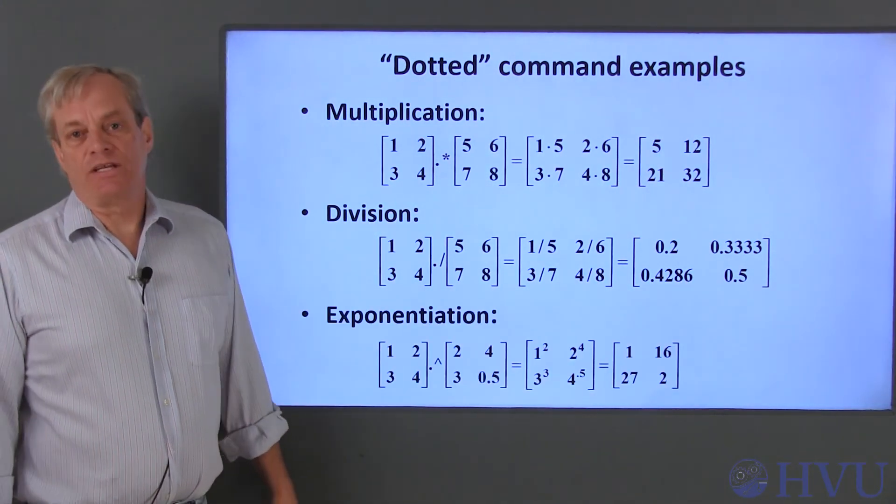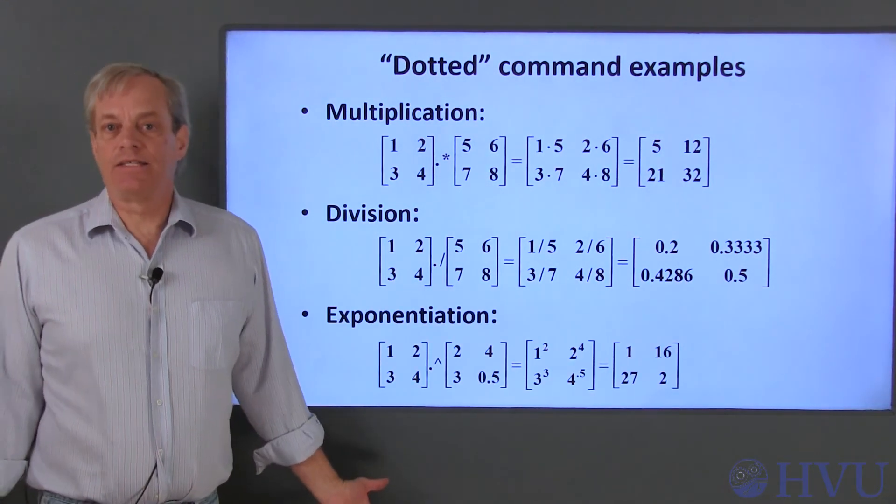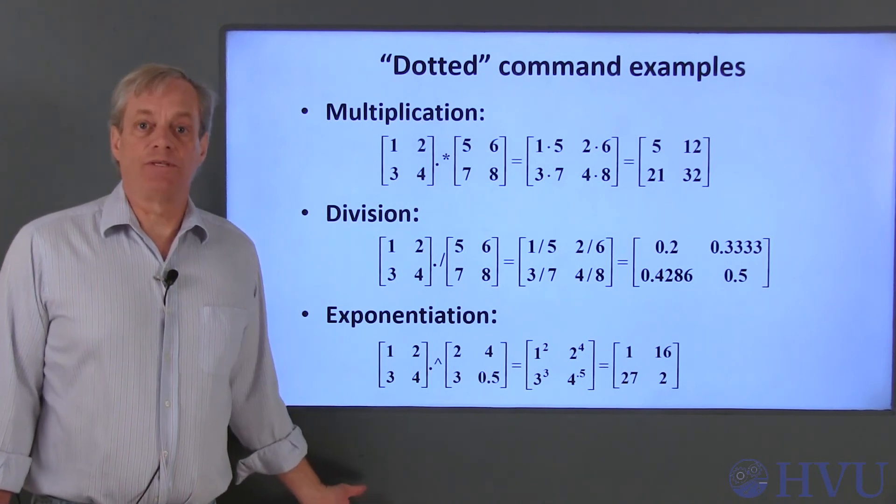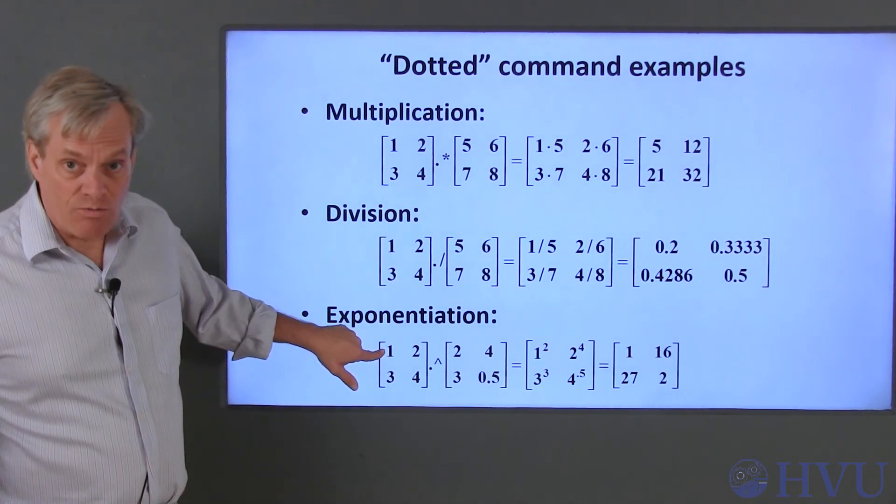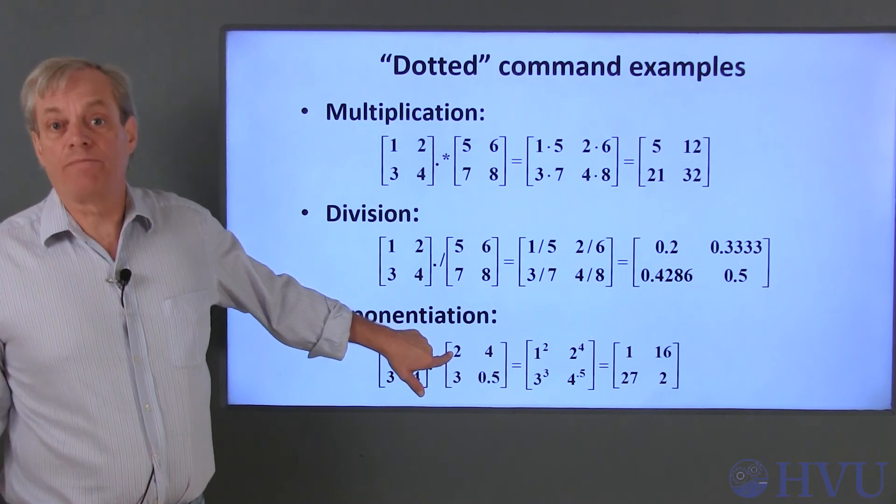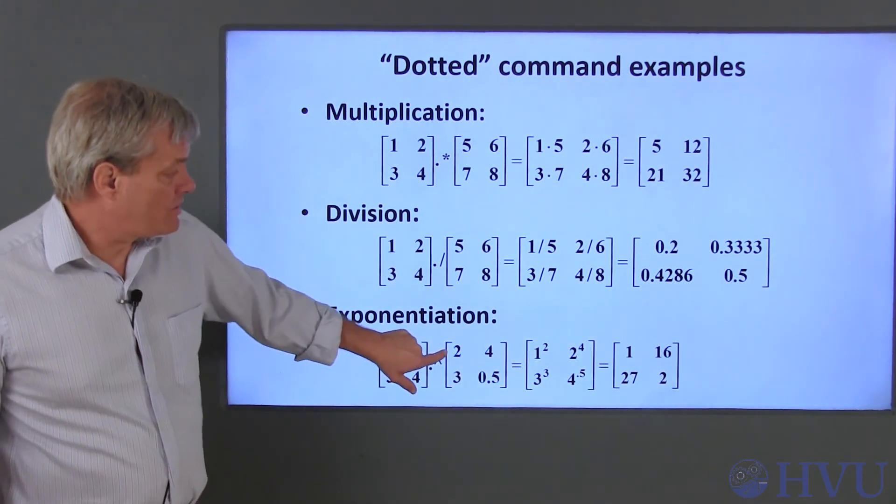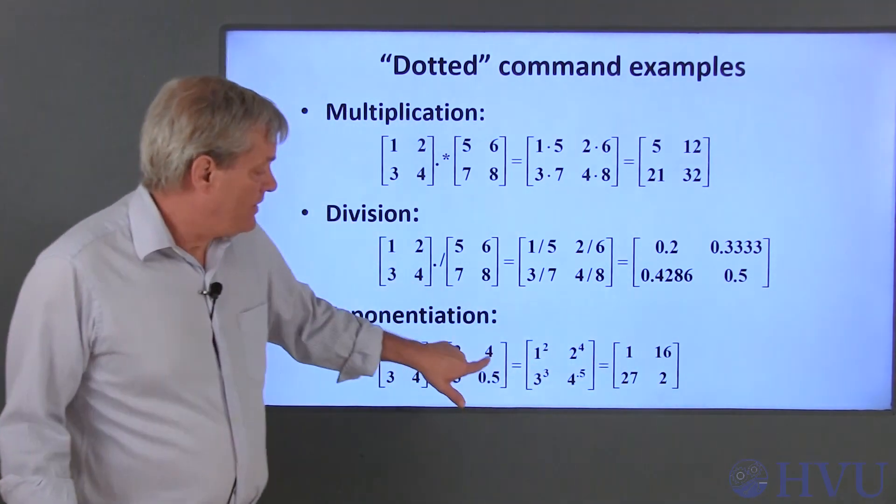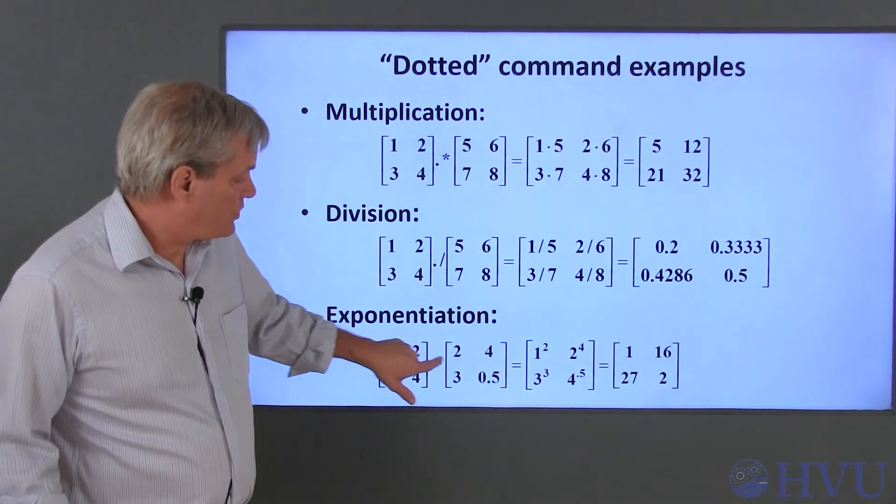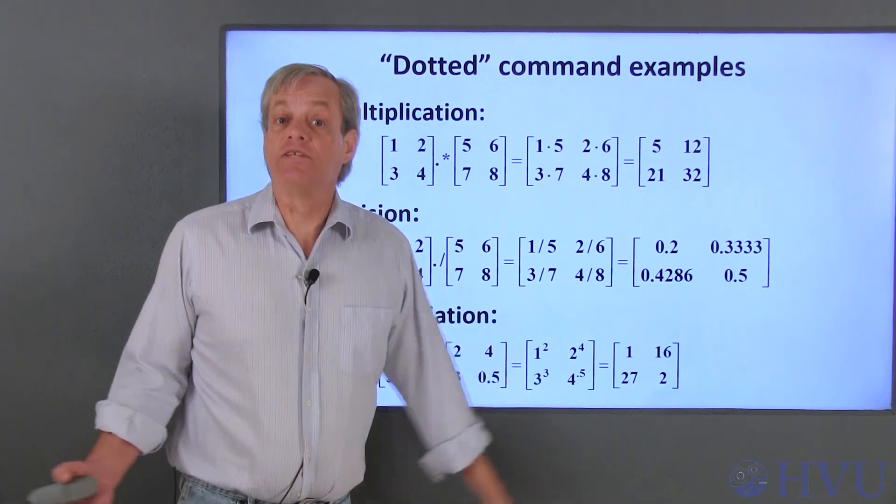The last example is exponentiation. The idea is still the same as the previous examples. The element in the first array is raised to the power given by the corresponding element in the second array. So this element is 1 squared, which is 1. This element is 2 to the fourth, which is 16, and so on.